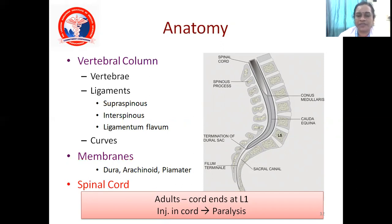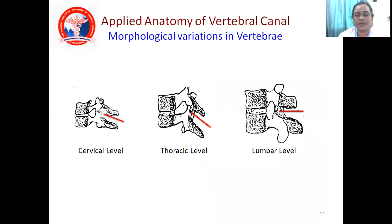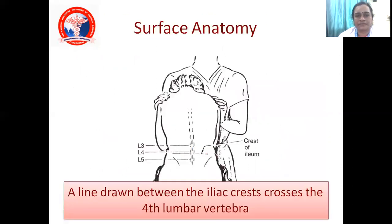So we select the space between L2, L3, L4, and L5 — anywhere in these spaces you can give spinal anesthesia. You can see the spinal needle entering the subarachnoid space, while another needle enters the epidural space. Now, how do you locate the space? This is surface anatomy. When you make the patient sit, you paint the region and locate the space between L2-L3, L3-L4, or L4-L5.